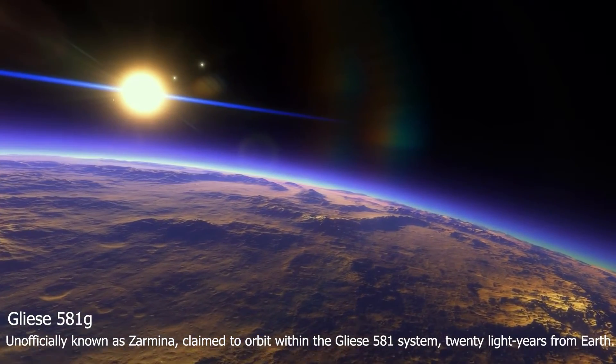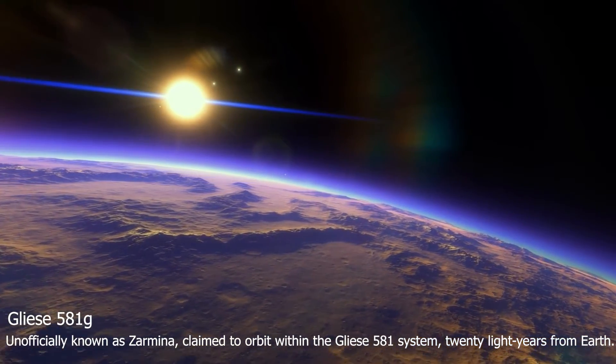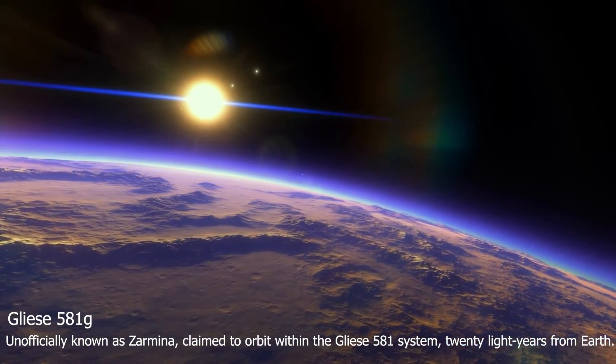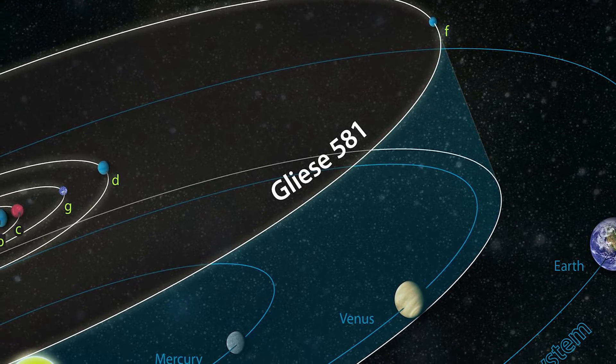If confirmed, the exoplanet, named Gliese 581g, would be the first Earth-like world found residing in a star's habitable zone, a region where a planet's temperature could sustain liquid water on its surface.